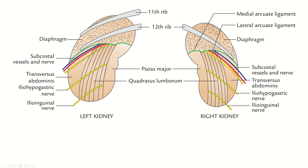The upper part of both kidneys is related with the diaphragm and also two ligaments of the diaphragm: the medial arcuate ligament and the lateral arcuate ligament.